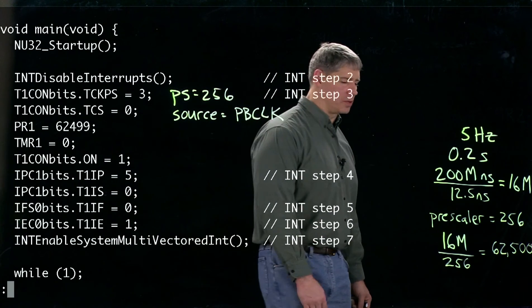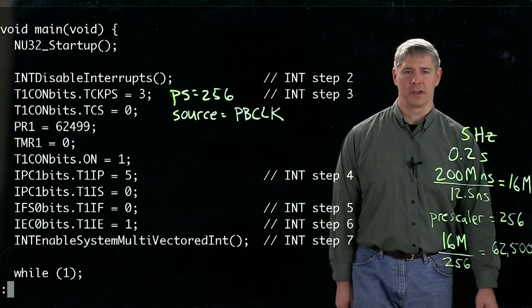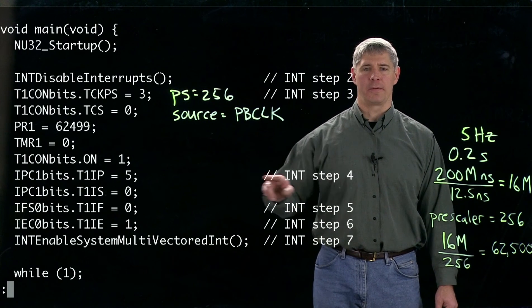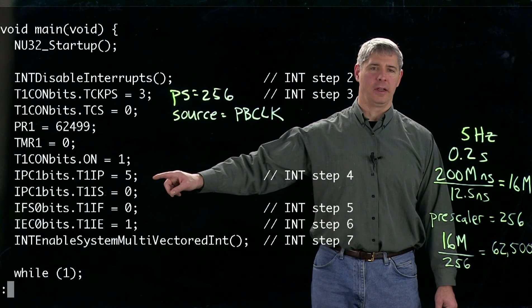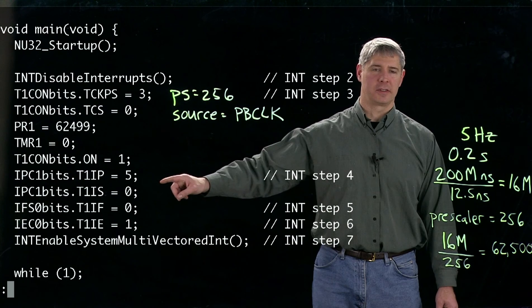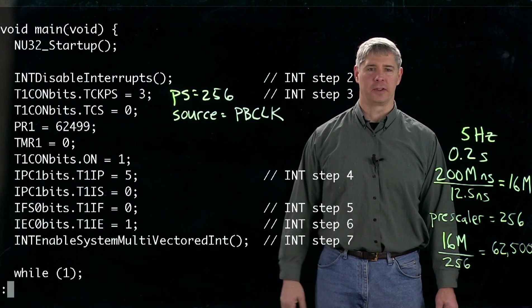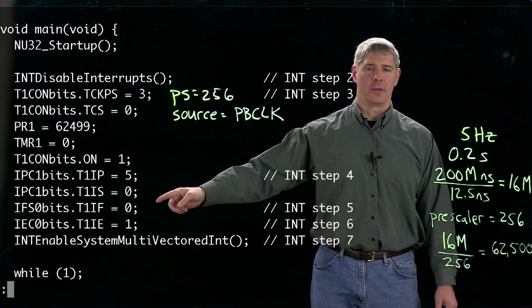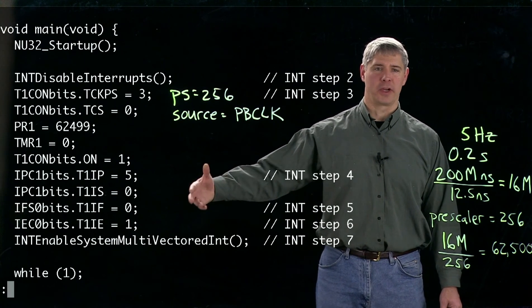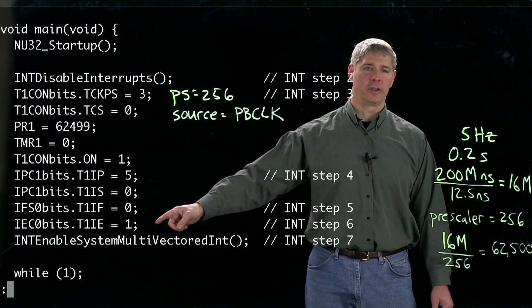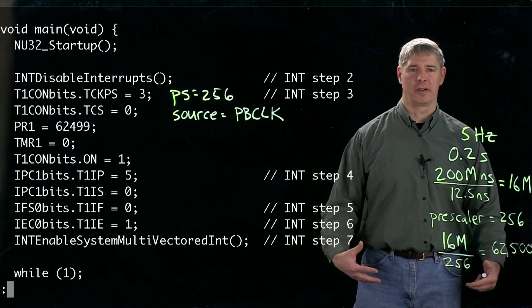So here in step four, we're going to set the priority of the interrupt to five, just to agree with our interrupt service routine earlier. Sub priority is zero. We're going to clear the